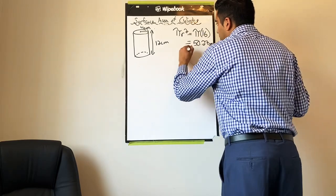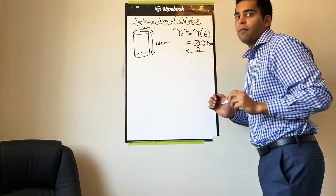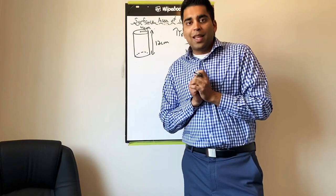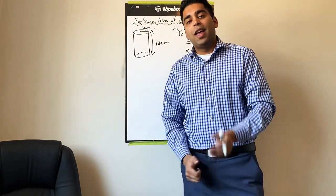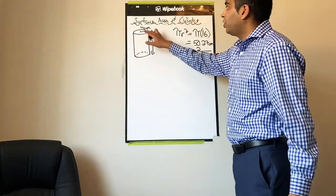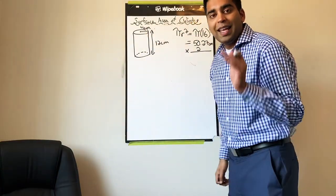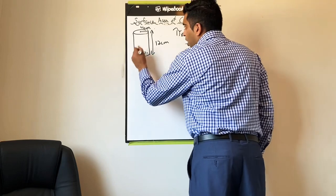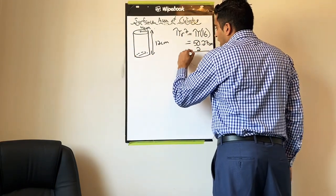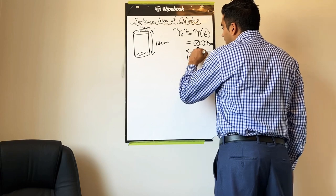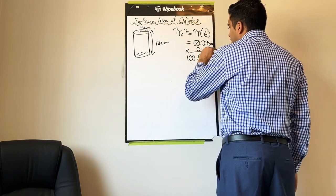I'm going to go ahead and multiply this number by 2. Why do you think I'll times that number by 2? That's right, because we have two equal circles in this cylinder, one at the bottom, one at the top. 50.27 times 2 is 100.54 centimeters squared.